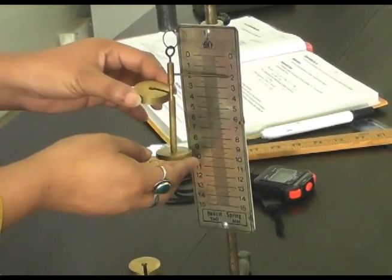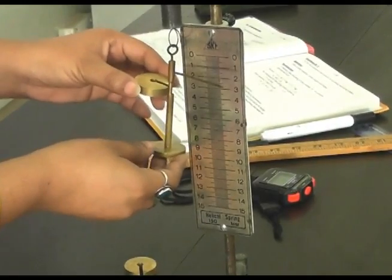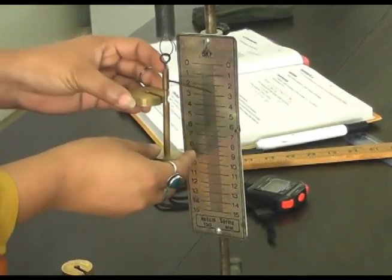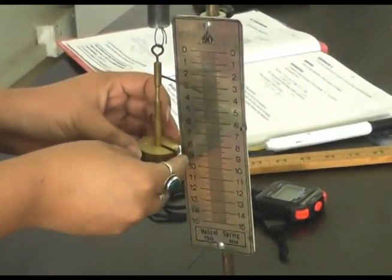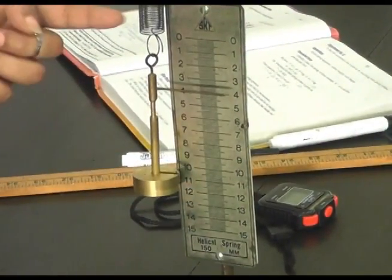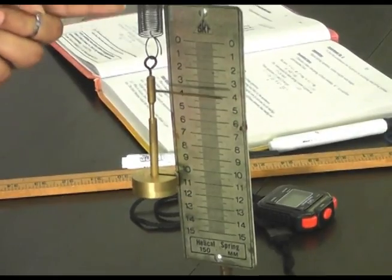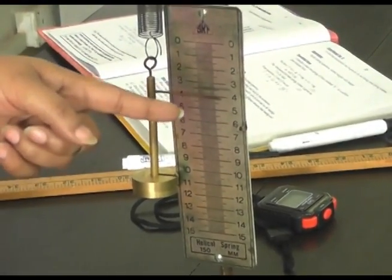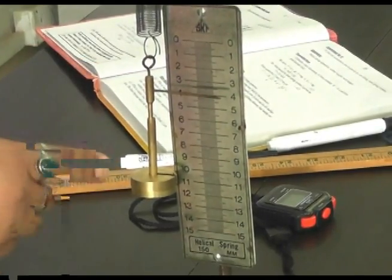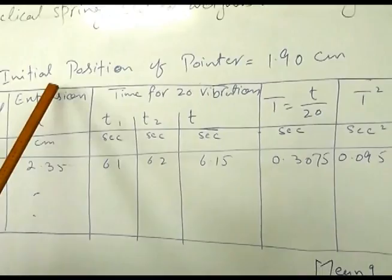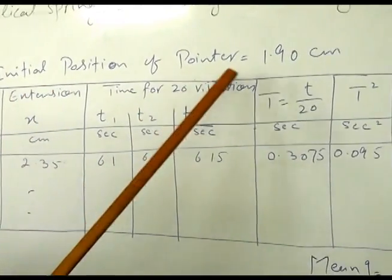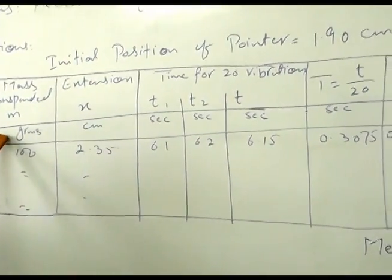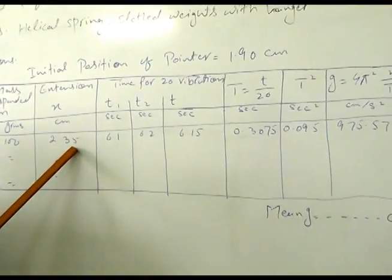Now we will add one more weight. This weight also carries 50 grams and extension in the spring is easily observed. So we will note this extension as well as reading on the meter rod with this pointer. Now the total weight of the pointer is 100 grams. The initial position of the pointer was 1.90, and after adding weight of 100 grams in the spring, the extension produced is 2.35 centimeters.